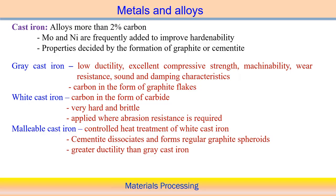Damping properties of white cast iron are very poor compared to gray cast iron, because damping depends on carbon present in the form of graphite flakes. Malleable cast iron is produced by controlled heat treatment of white cast iron, causing cementite to decompose, and regular graphite ferrites can be converted from the cementite phase, which imparts good ductility compared to gray cast iron.